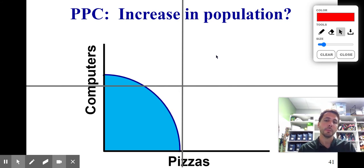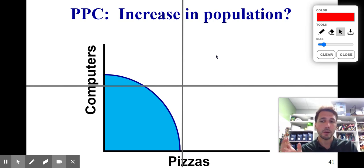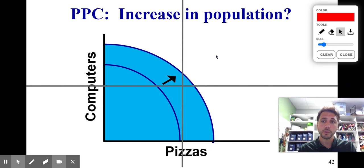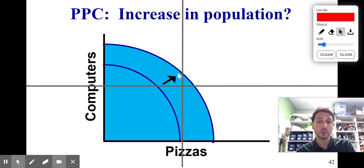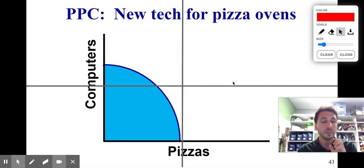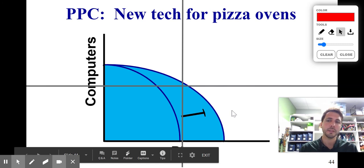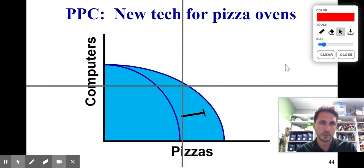We have computers and pizza — notice it's bowed out, so opportunity costs are increasing. If there's an increase in population, that's an increase in the quantity of our resources, meaning we can produce more of both computers and pizzas. We'll see this shift outward to the right, and things that used to be unattainable can now be attainable. What if we have new technology only for pizza ovens? We're going to see an increase in the production of pizzas but it won't really impact computers at all. So we'll see a lopsided increase — more pizzas, the same amount of computers: a lopsided shift.